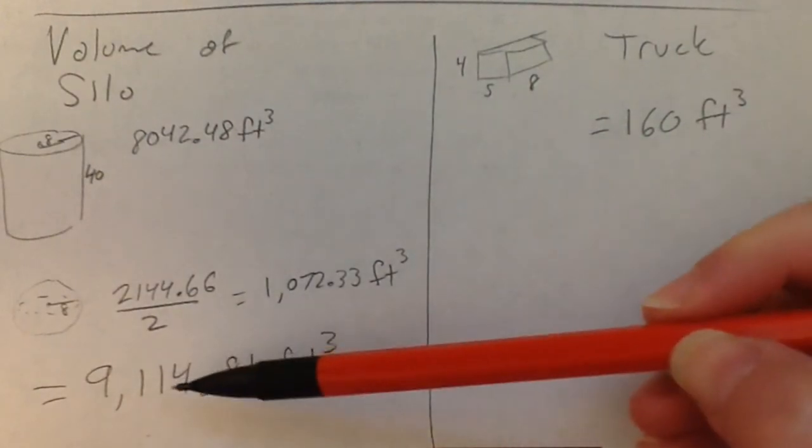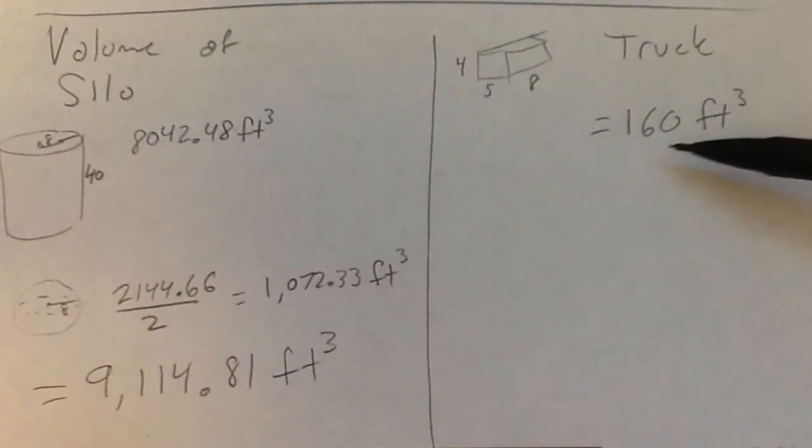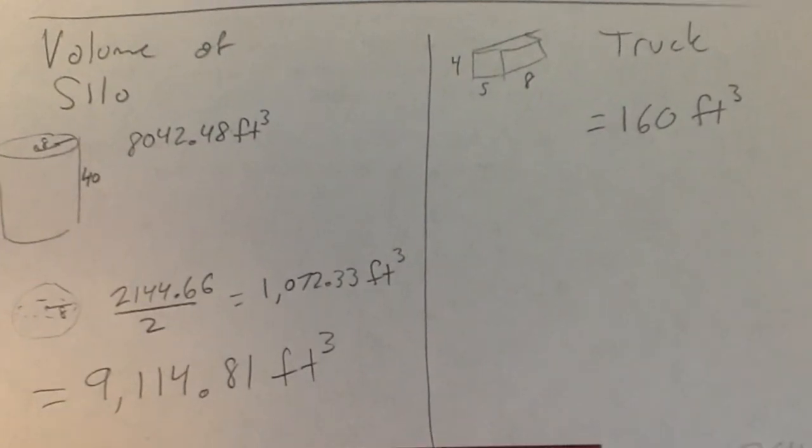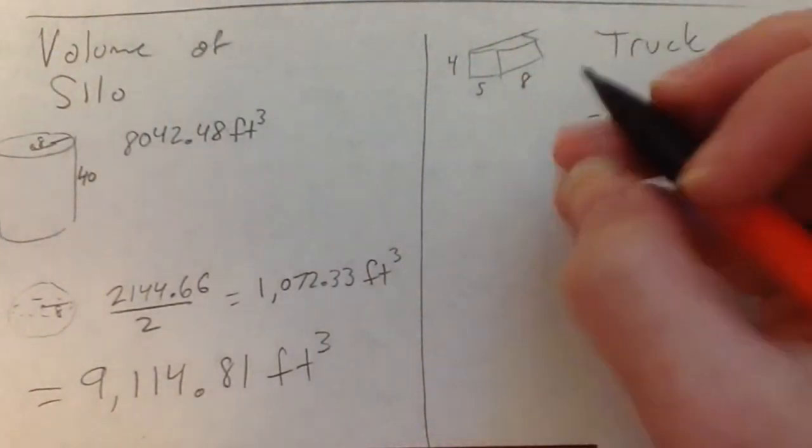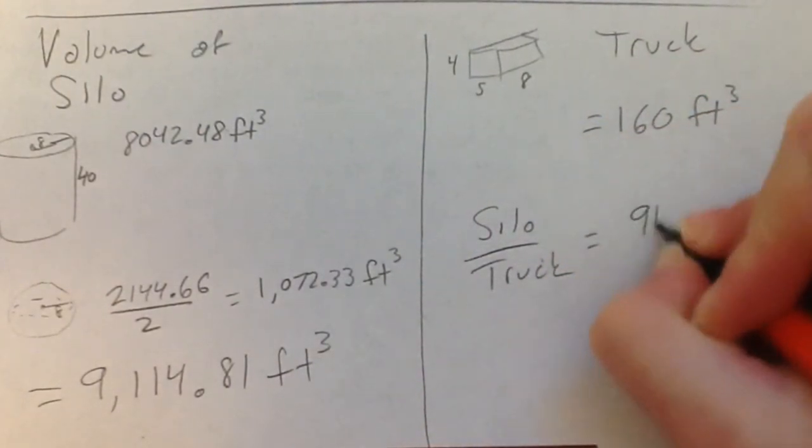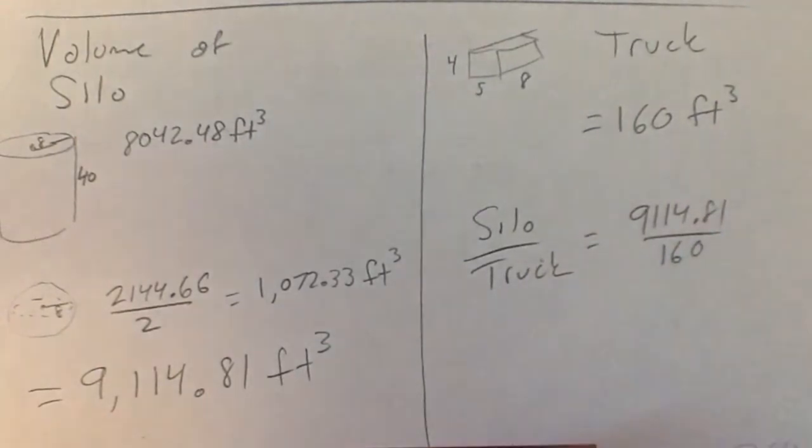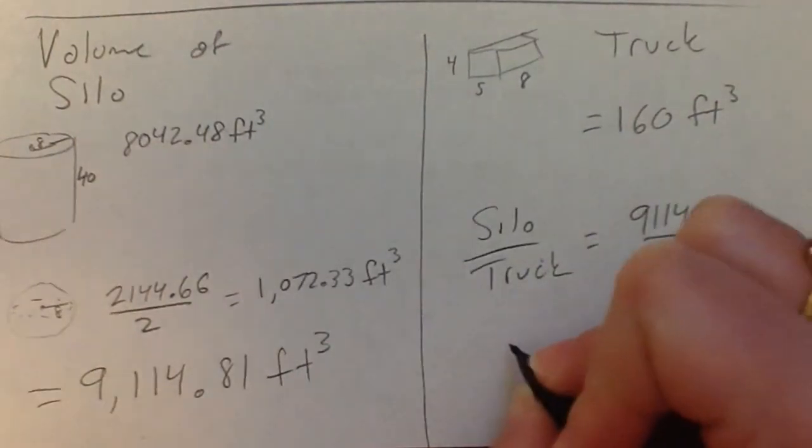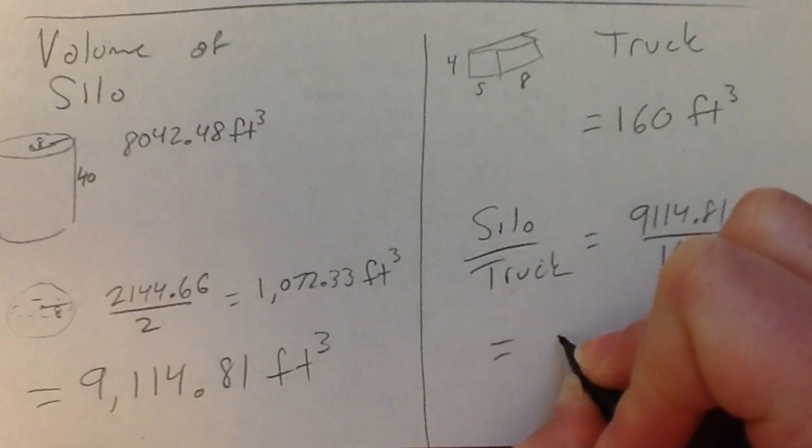So, considering the fact that it carries 9,000 and you can only put in 160 each time, it's going to be several trips. But let's find out how many this is. So we need to do the silo divided by the truck. Let's see what that is. So I'm getting it's like 56.9, so 57 trips.